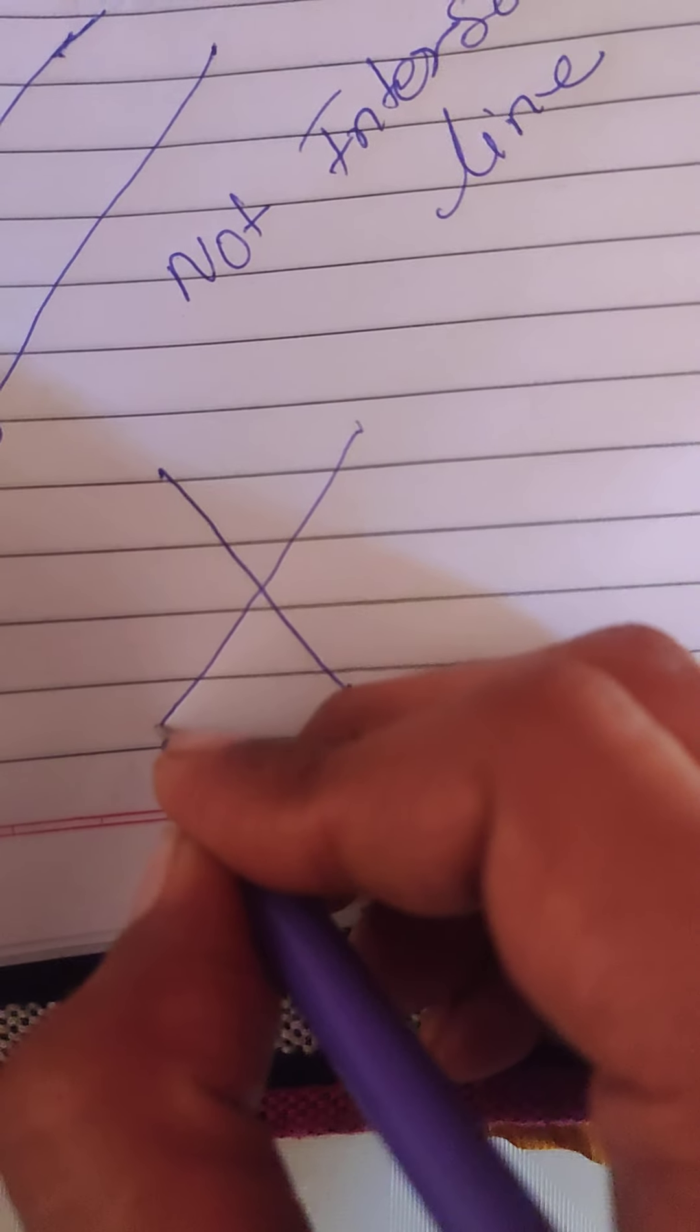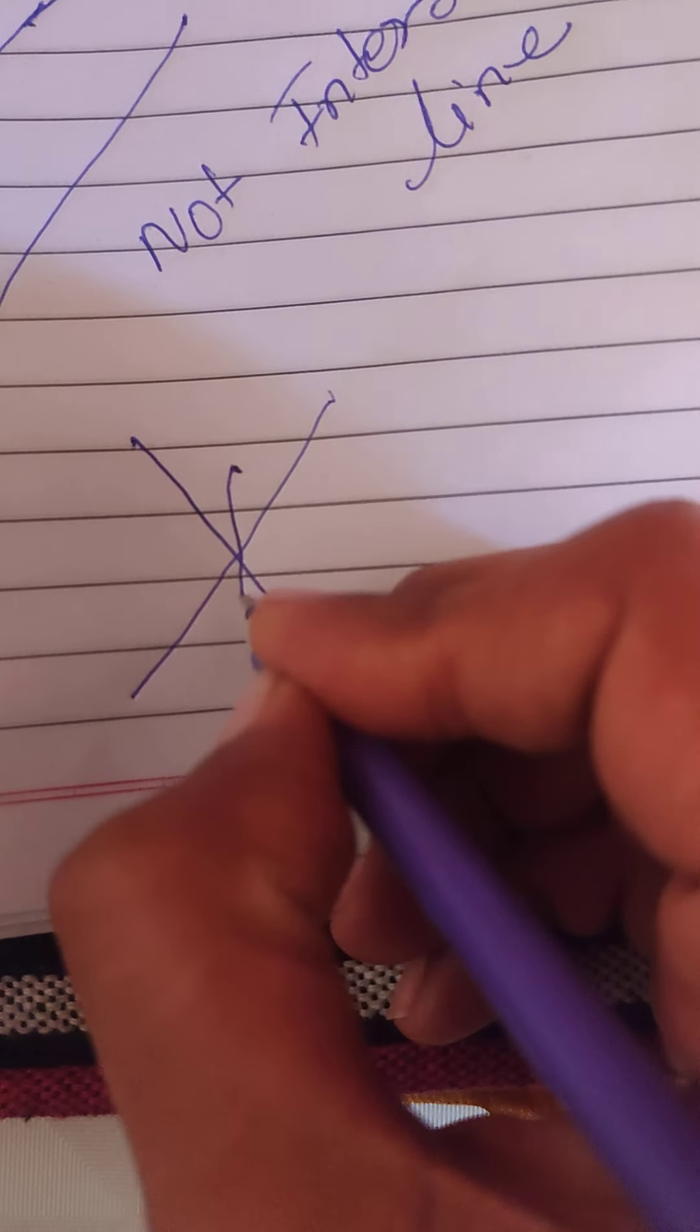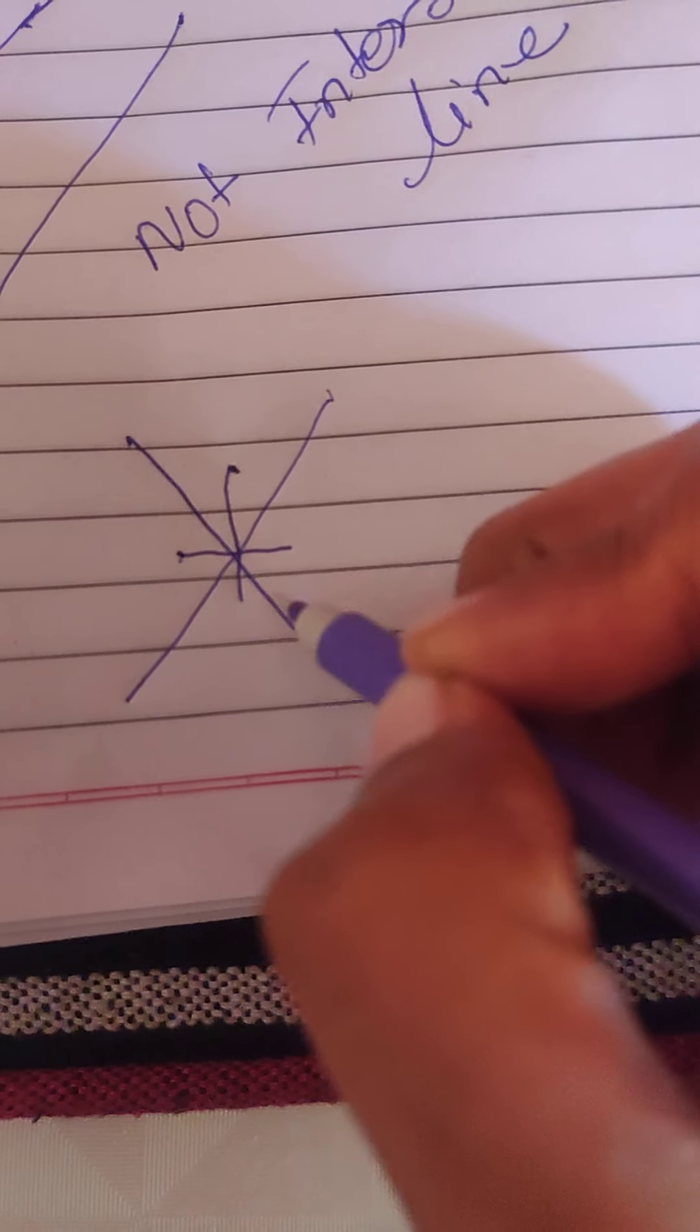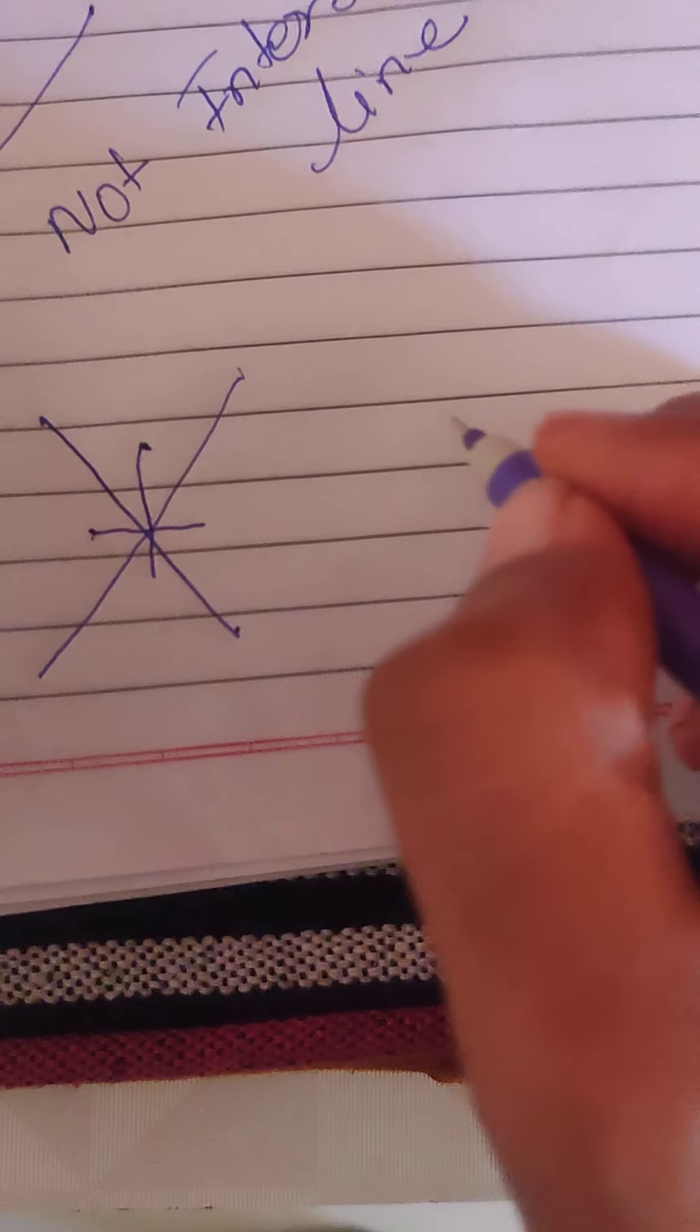Here we learn what is an intersecting line. It is an intersecting line because there are two and three lines. They intersect each other. It is called an intersecting line.